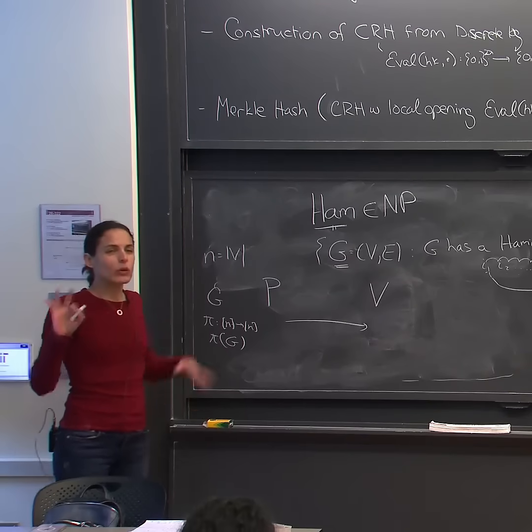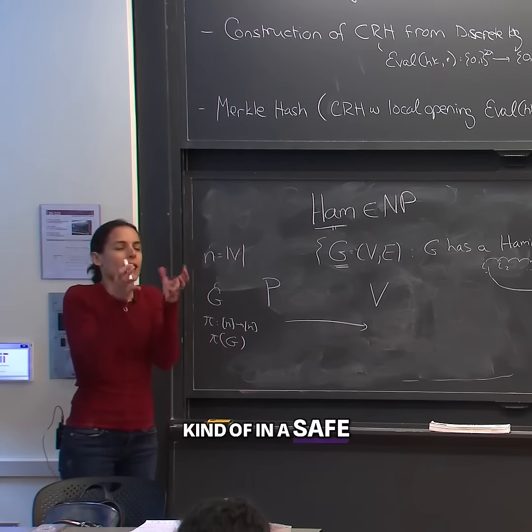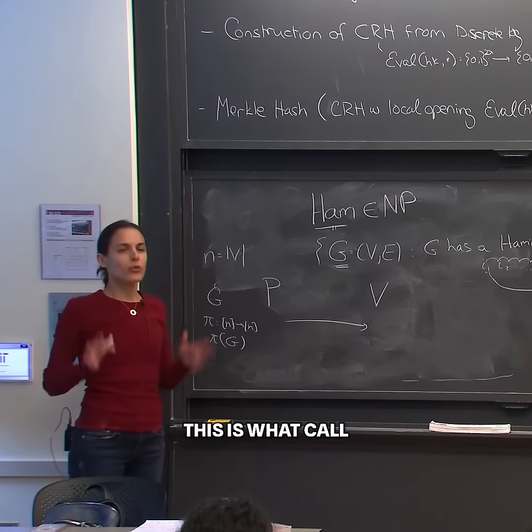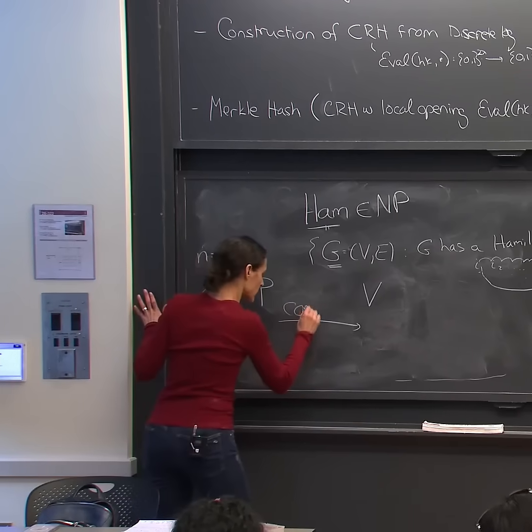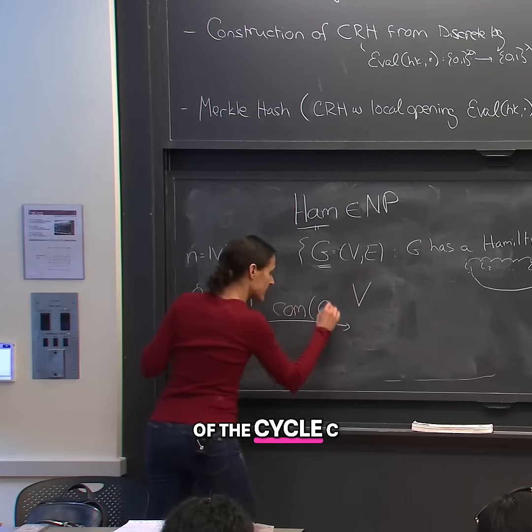Instead, I'm gonna give it to you kind of in a safe, hidden way. This is what in cryptography we call a commitment scheme. So I'm gonna give you a commitment of the cycle C.